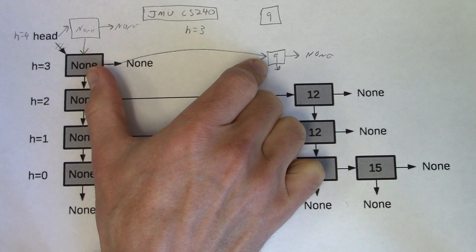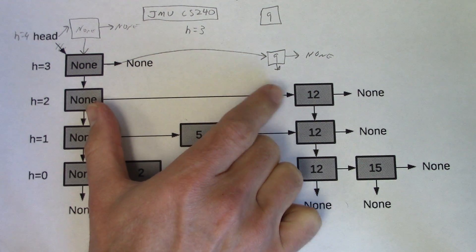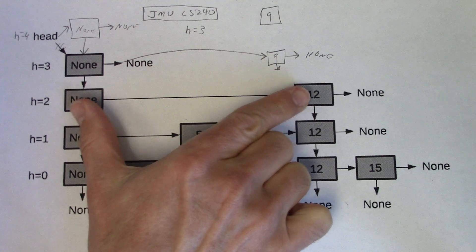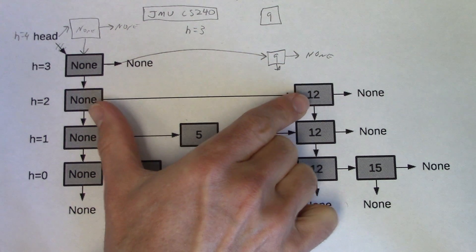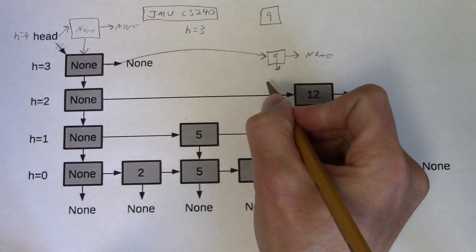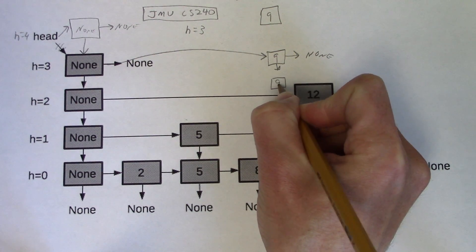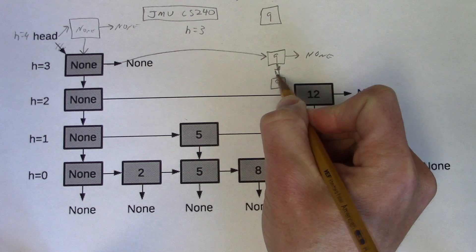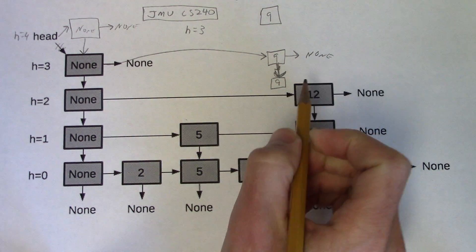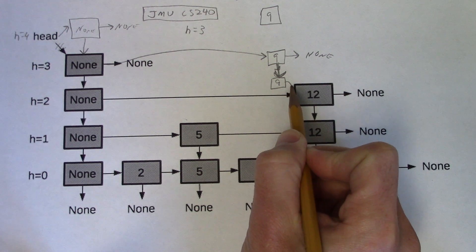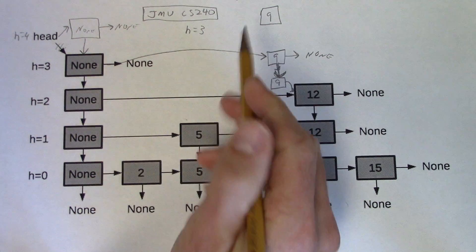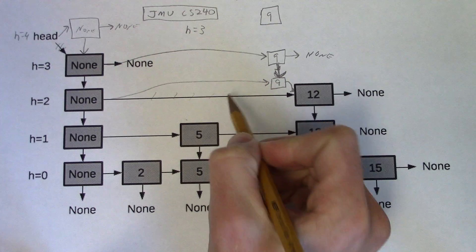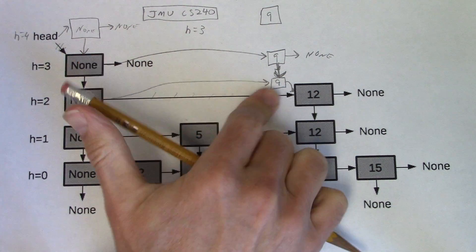I move my current reference down and again check whether I can skip forward. I can't skip forward because 9 is less than 12, so I've found the correct location for an insertion at this level. I create a new node. I reach back up to the previously created node and change its below reference to refer to the newly created node. I also change the new node's next reference to current's next, and then change current's next to refer to the newly created node. The node is now correctly inserted at this level.